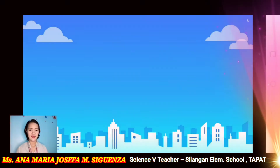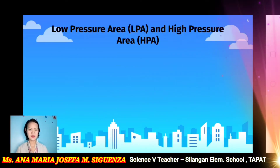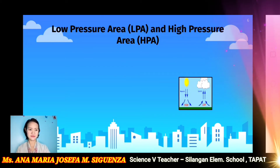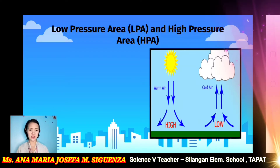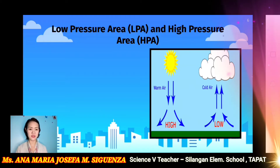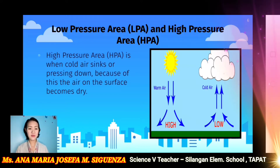Let us now proceed to the low pressure area or the LPA and the high pressure area or the HPA. This refers to the weight of air that is pressing down on earth. A sudden change in air pressure can trigger weather disturbances. High pressure area or the HPA is when cold air sinks or presses down. Because of this, the air on the surface becomes dry, and that is the time that we experience fine weather.